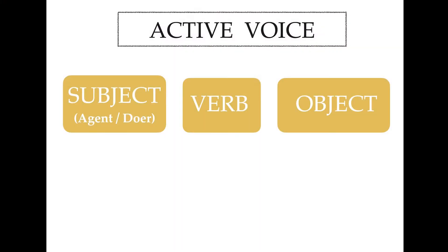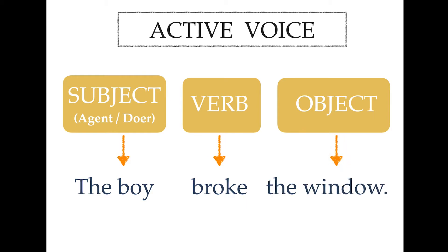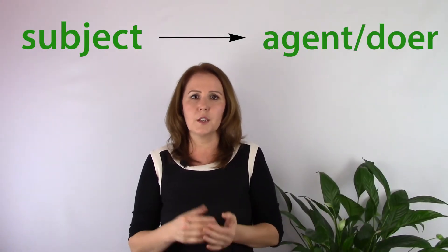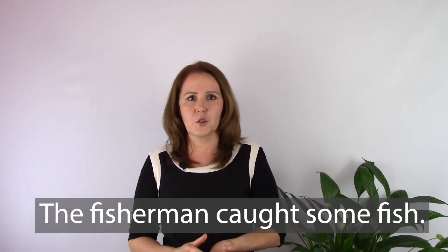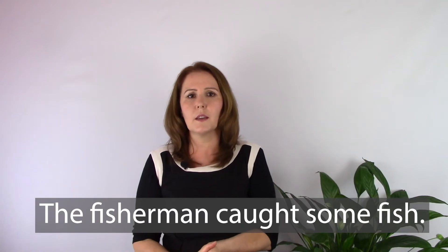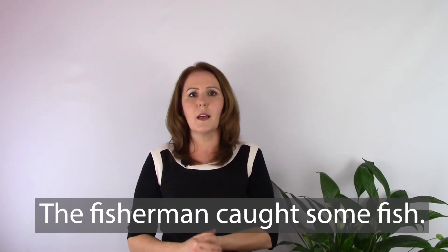Let's look at the model — a sentence with the active voice. 'The boy broke the window.' The boy is the subject, broke is the verb, and the window is the object. In an active sentence, the subject performs the action of the verb — the subject is an agent or a doer. Another example: 'The fisherman caught some fish' — the fisherman is an agent and he performs an action.